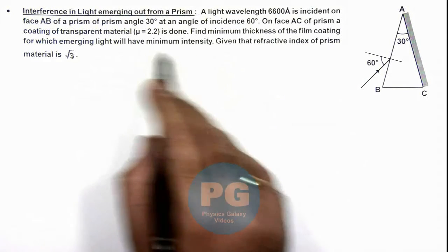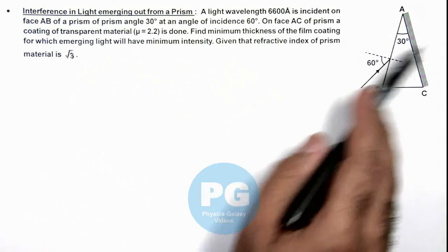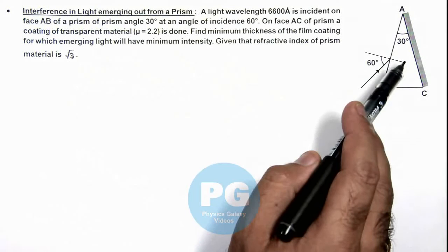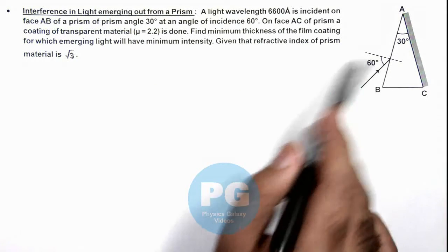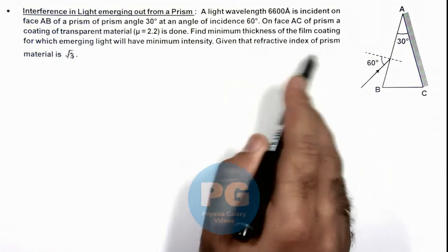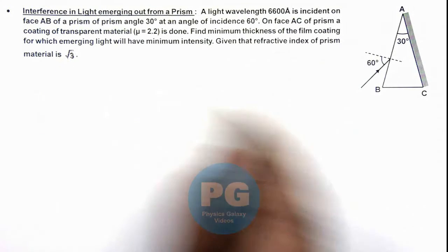Minimum intensity implies the light emerging out will have destructive interference in the two beams. We are also given that the refractive index of prism material is root 3.